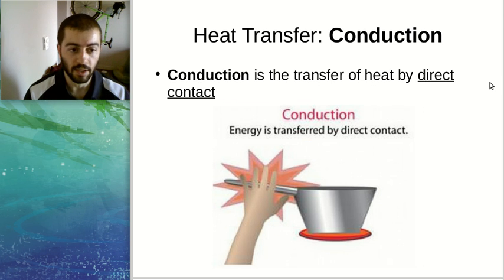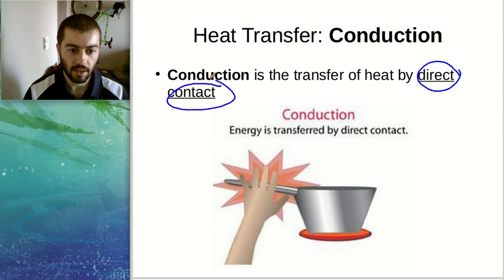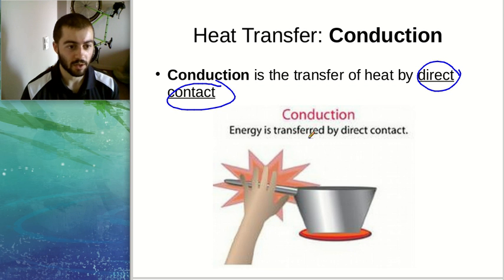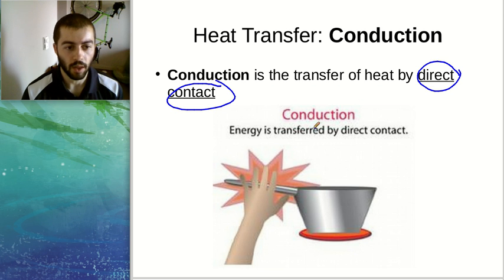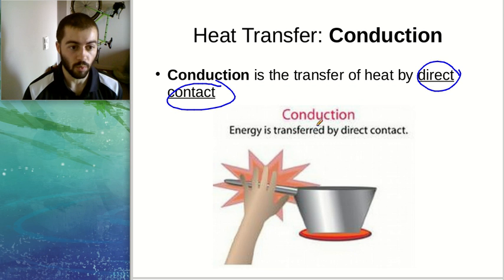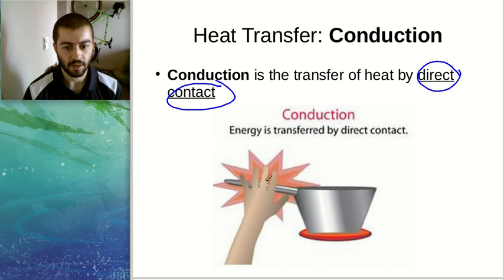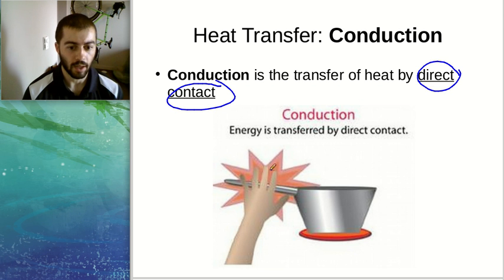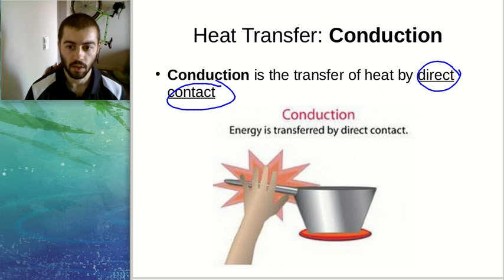The next type of heat transfer is conduction. Conduction happens by direct contact. For example, touching something cold outside in the winter — that's conduction because you're directly contacting it. Here we have a person touching a hot pan: that is conduction of heat from the handle to the hand because they are directly contacting the pot. So if there's direct contact, that's going to be conduction.